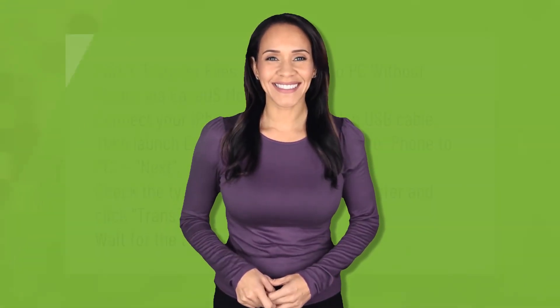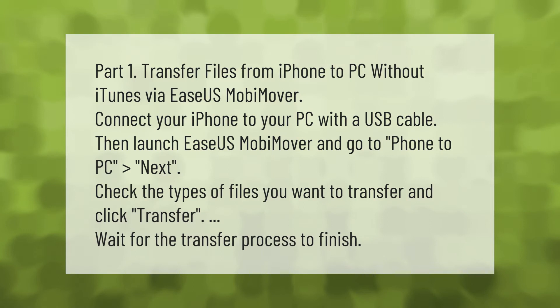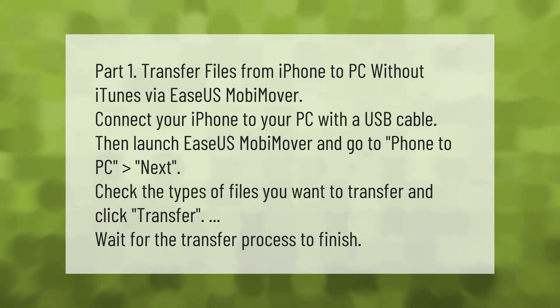Part one: Transfer files from iPhone to PC without iTunes via EaseUS MobiMover. Connect your iPhone to your PC with a USB cable, then launch EaseUS MobiMover and go to Phone to PC, then Next. Check the types of files you want to transfer and click Transfer. Wait for the transfer process to finish.